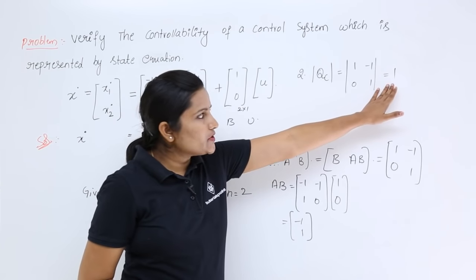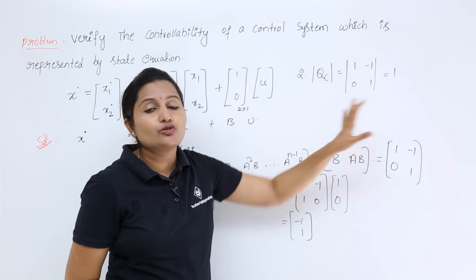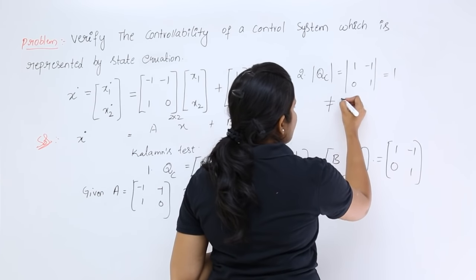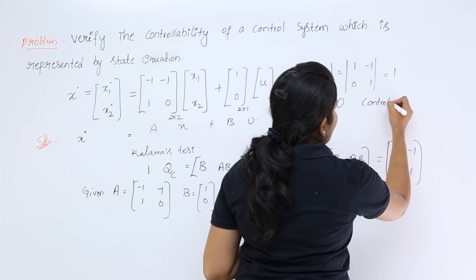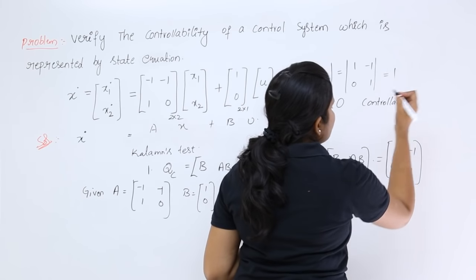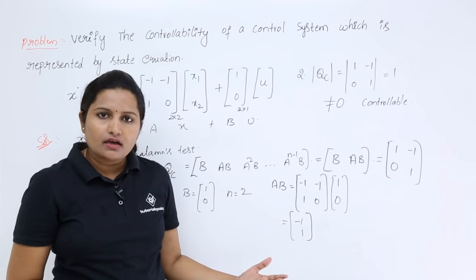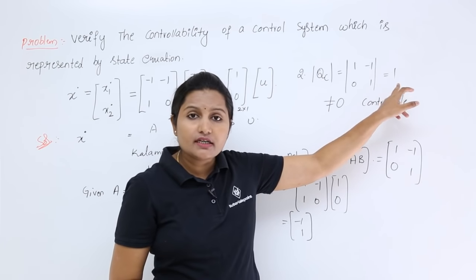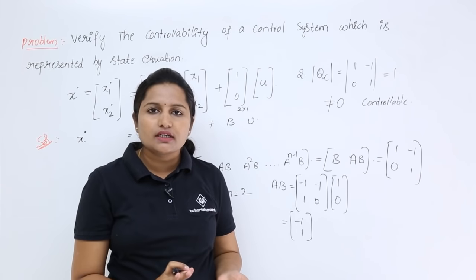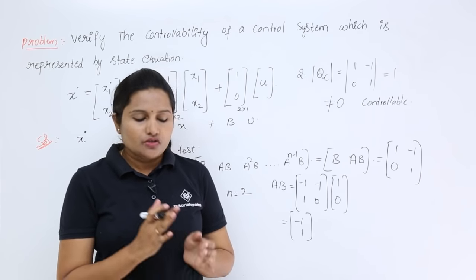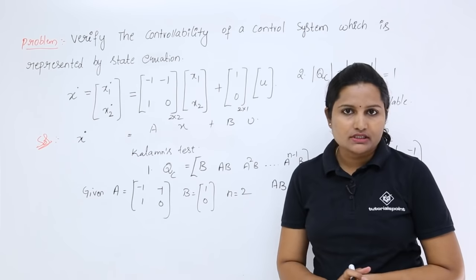The determinant of QC is not equal to 0. Since the determinant is not zero, the system is controllable. If in any other problem the determinant comes out to be 0, then we can say the system is not controllable.